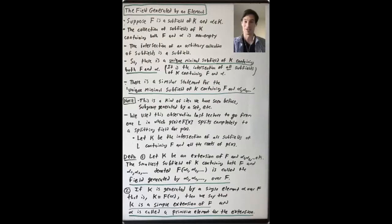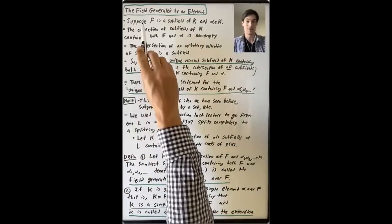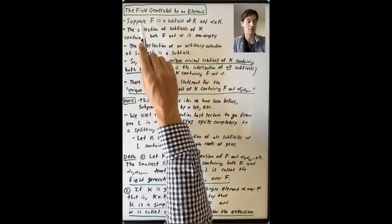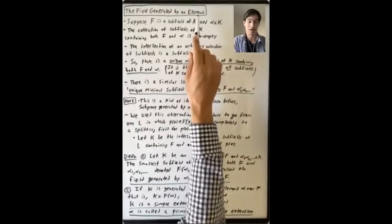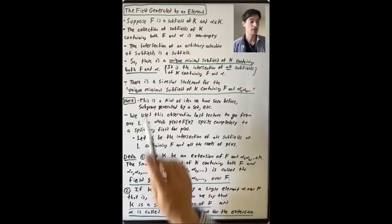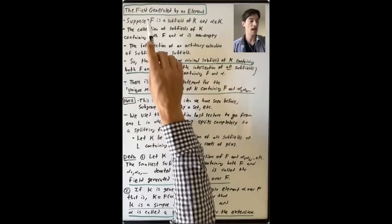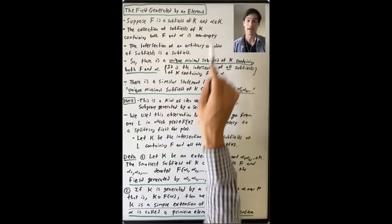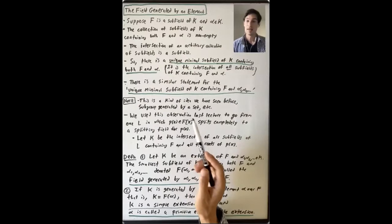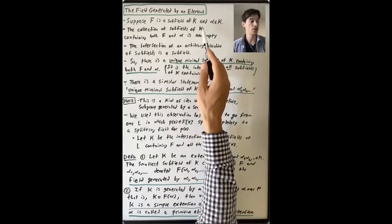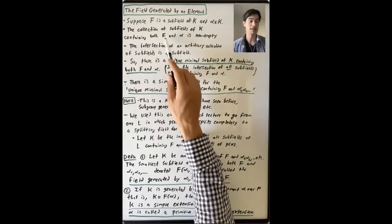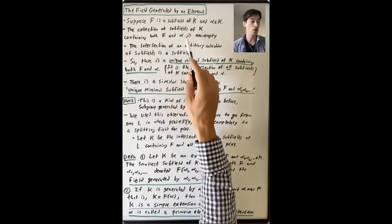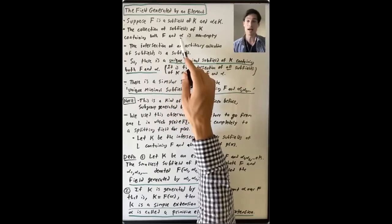In this last video of this lecture, I want to tie together a few things that we've been talking about so far. The first thing I want to talk about is the field generated by an element. The setup is: suppose F is a subfield of K, and alpha is an element in K. Then you can take the collection of all subfields of K that contain both F and also this one element alpha.